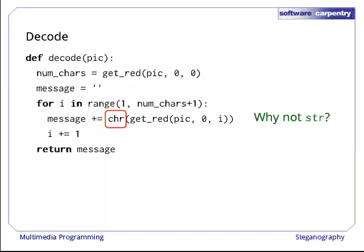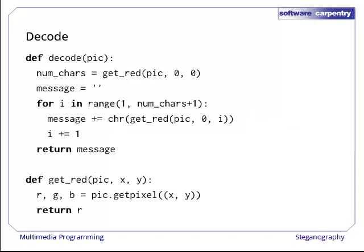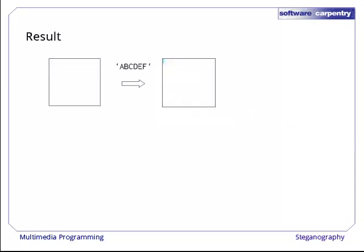As an exercise, see if you can figure out why we have to use char and why we cannot use str to do this conversion. Finally, here's the getRed function. It grabs the pixel at XY, then returns the red component.